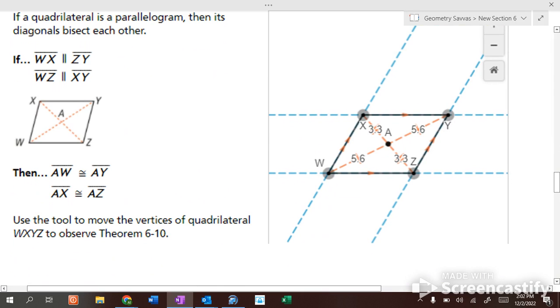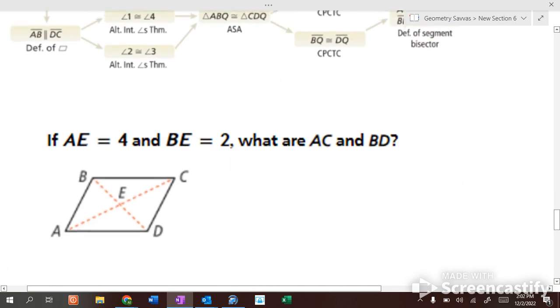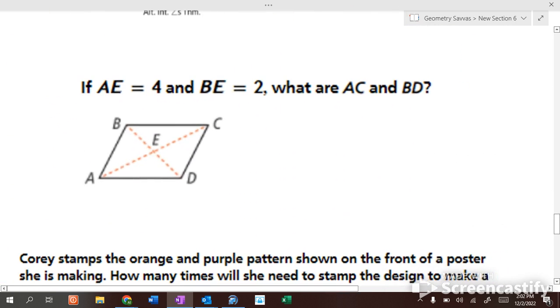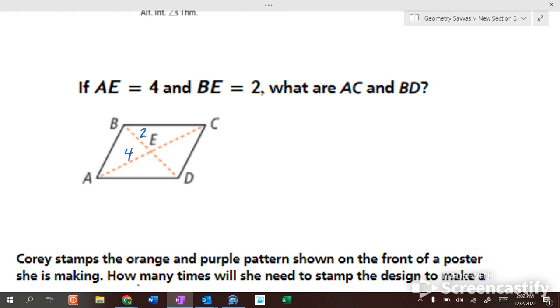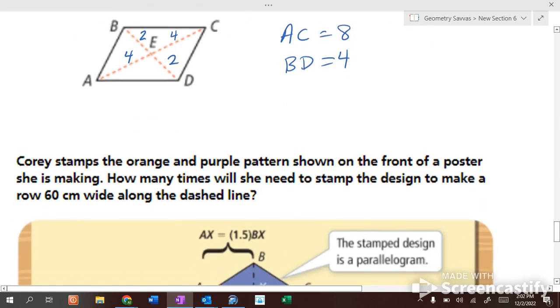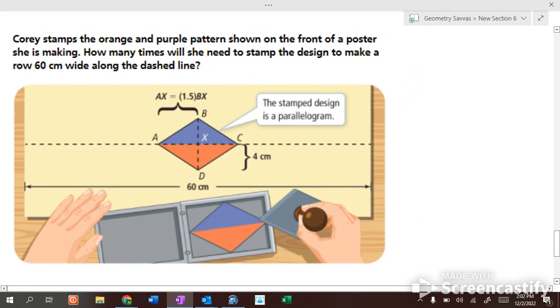Diagonals bisect each other. They split each other in half. That talks about splitting each other in half. So if AE is 4 and BE is 2, how long is EC? 4. ED? 2. How long is AC? 8. How long is BD? 4.